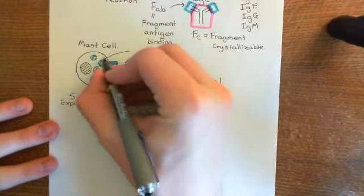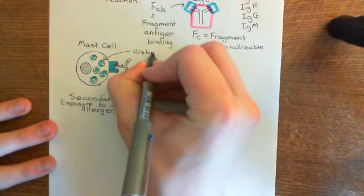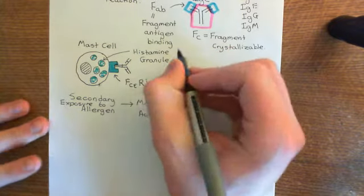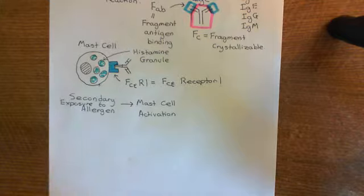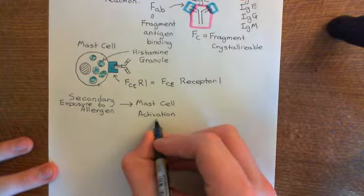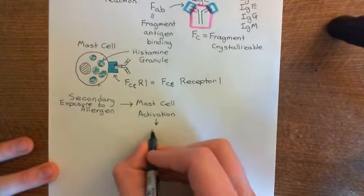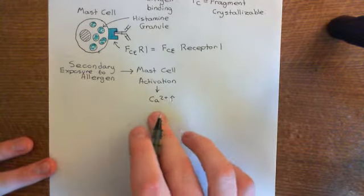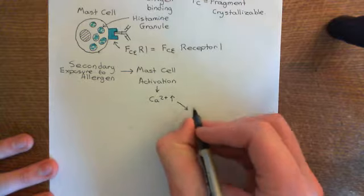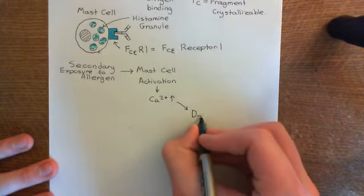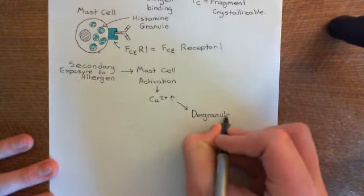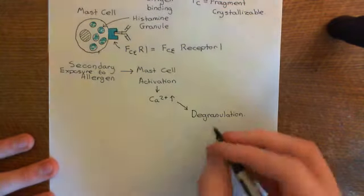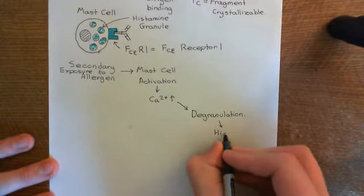These are called histamine granules within the cytoplasm of the mast cell. When you activate these mast cells, you're going to get the release of these histamine granules, but also more than that. Mast cell activation results in an increase in calcium in the cytoplasm of the mast cells. One thing this leads to is the exocytosis of these histamine granules — that's known as degranulation, or mast cell degranulation — releasing a huge amount of histamine into the extracellular fluid. So one of the key mediators that mast cells release is histamine.